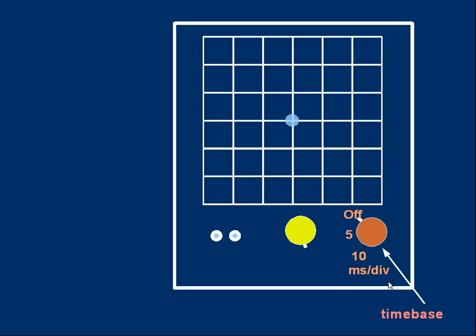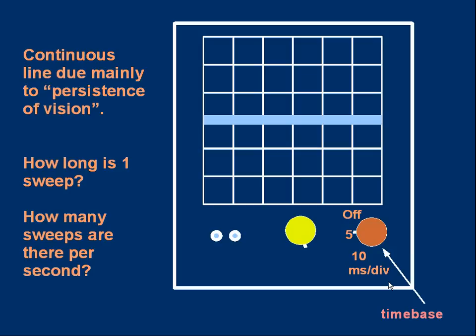What happens is you'll see a continuous line across the screen. And that's because the time-based circuit inside the oscilloscope is making the spot move across the screen at a steady speed. When the spot reaches the right side, it moves the spot instantly back and starts it moving across the screen again. And that process is repeated over and over.